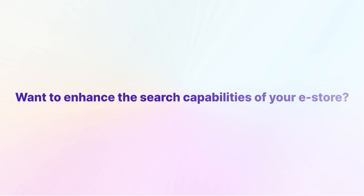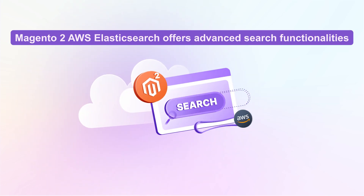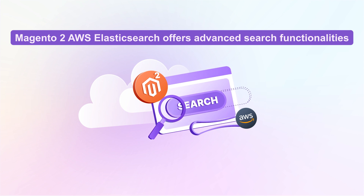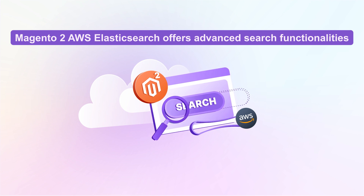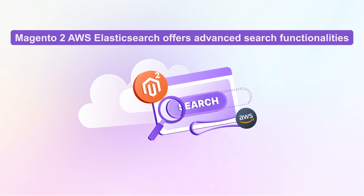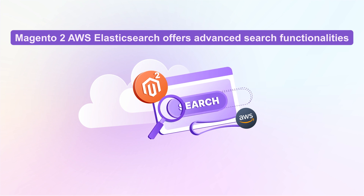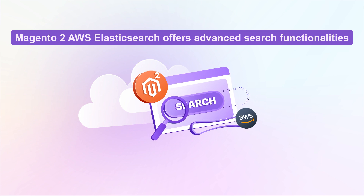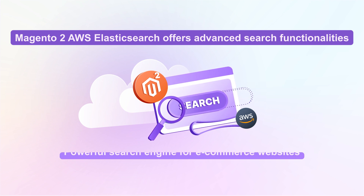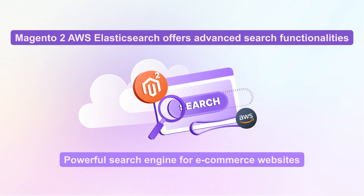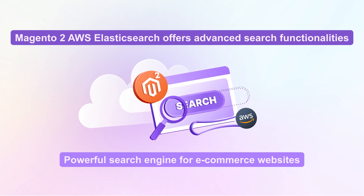Want to enhance the search capabilities of your eStore? Magento 2 AWS Elasticsearch offers advanced search functionalities that can significantly boost your online store's performance. It combines Magento 2 and Elasticsearch on AWS, creating a powerful search engine for eCommerce websites. Here's why you should consider using it.